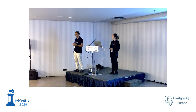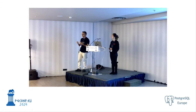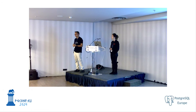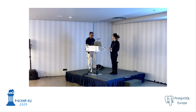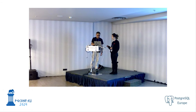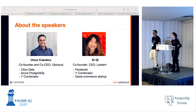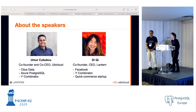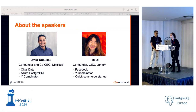We have a joint session today. Lantern is an open source Postgres vector database, covering the extension side. UbiCloud is an open source alternative to AWS on the cloud side. I'll let Dee start with an intro. Hi everyone, my name is Dee. I met Umur and the rest of the UbiCloud team at YC. Before that, I worked at Facebook on the ads ranking team, and now I'm working on Lantern.